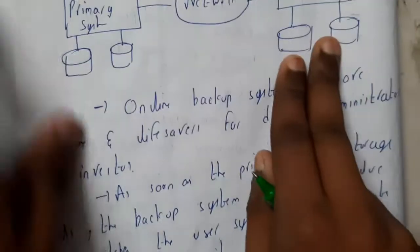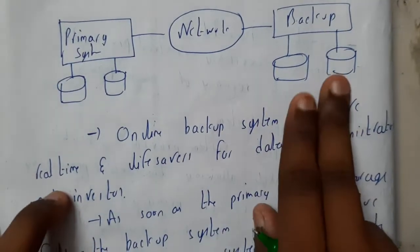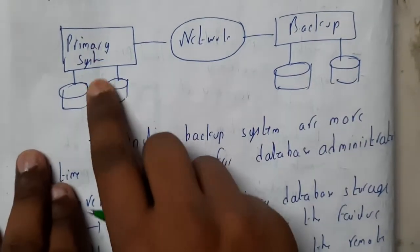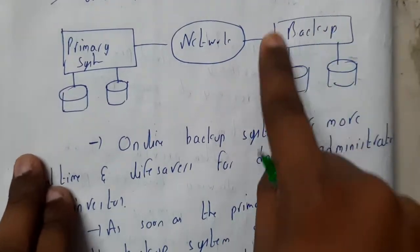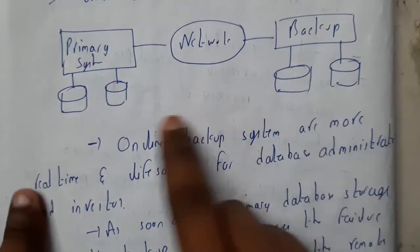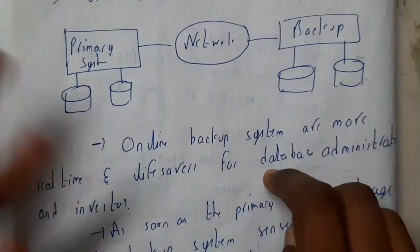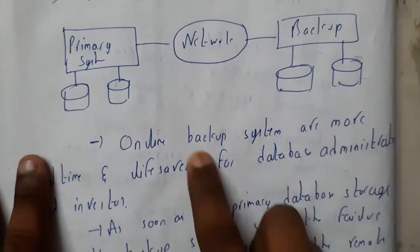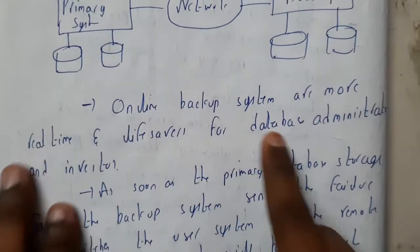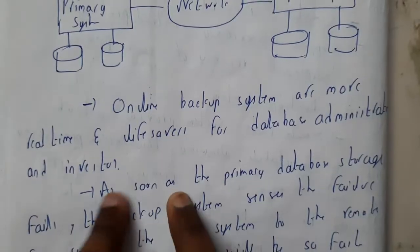If you consider the backup here, this will be your primary system, network, and backup — that is nothing but another system. Whenever your system crashes, this system will be active and serves the requirements. Online backup systems are more real-time and are lifesavers for databases.